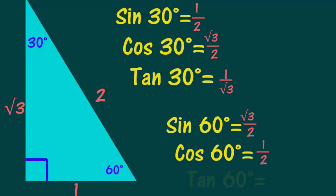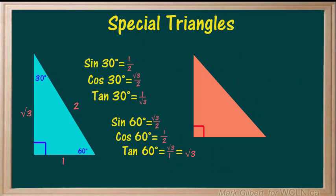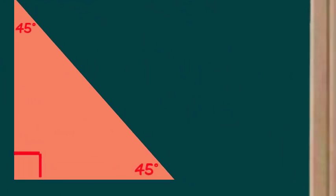The tangent of 60° is √3/1, or just √3. Let's look at the second triangle. It is the 45-45-90 degree triangle.